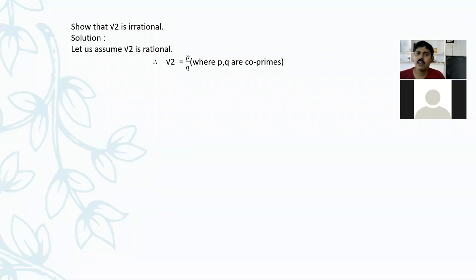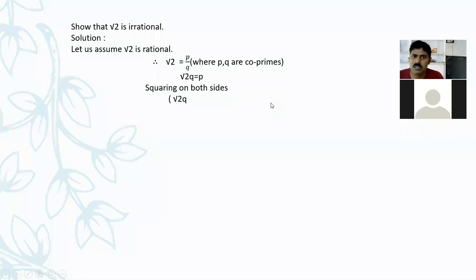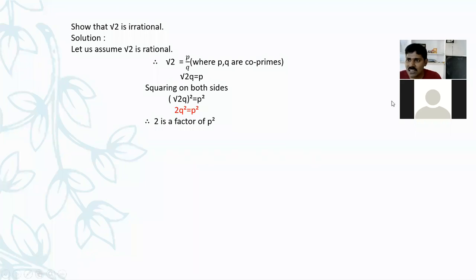When we assume it is rational, every rational number can be written in the form p by q, where p and q are co-primes — meaning the rational number is in its simplest form. So root 2 equals p by q. Taking q to the left-hand side: root 2 times q equals p. Squaring both sides gives us 2q² equals p². I'll take this as equation one. By this, 2 is a factor of p².